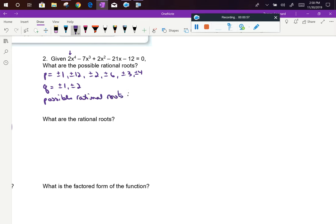So my p over q's, first everything would be divided by 1, so that's just my list of p's. So I've got plus or minus 1, plus or minus 12, plus or minus 2, plus or minus 6, plus or minus 3, and plus or minus 4.